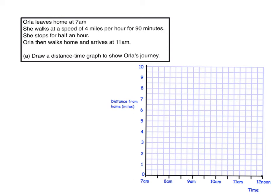Okay, so we need to draw a distance-time graph here. Let's have a look. Orla leaves home at 7am, she walks at a speed of 4 miles per hour for 90 minutes, she stops for half an hour, she then walks home and arrives at 11am. Draw a distance-time graph to show Orla's journey.